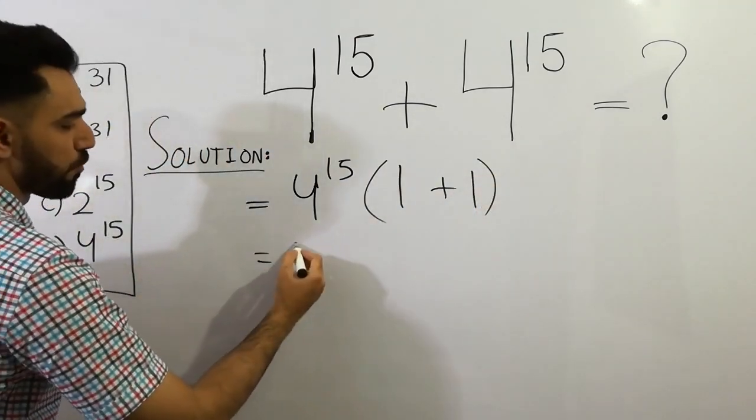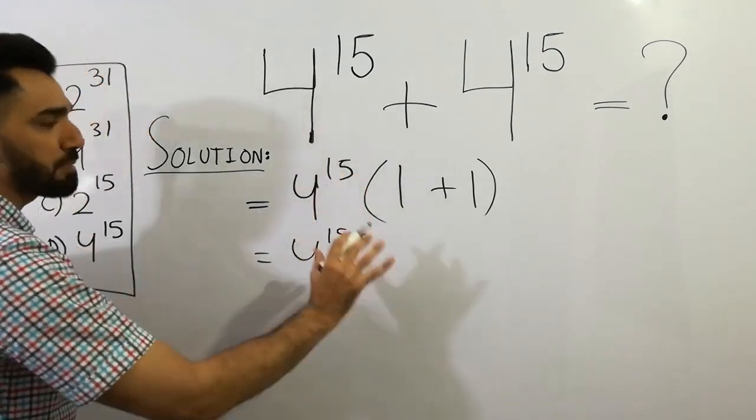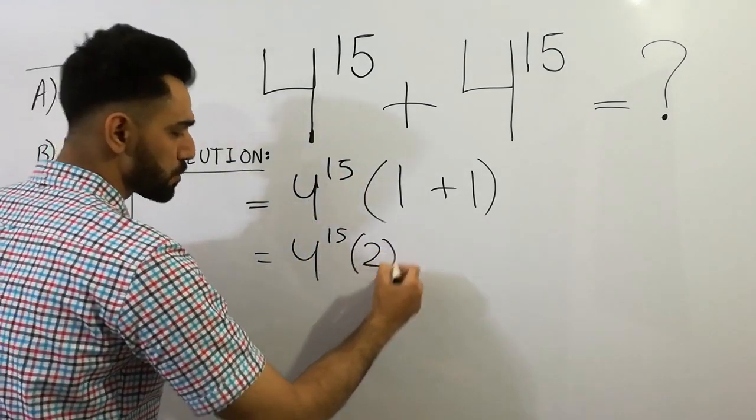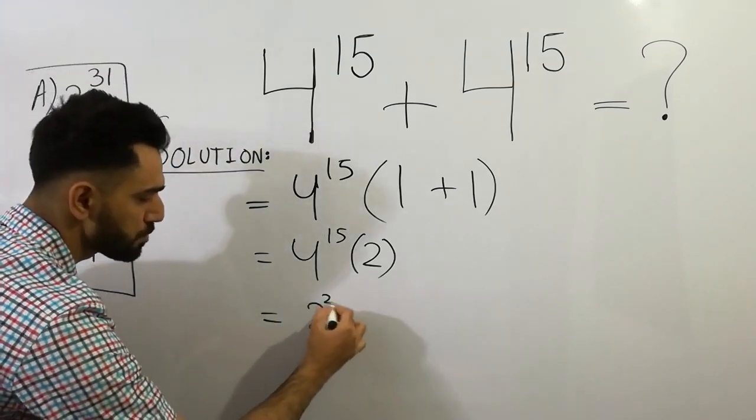The next step: 4 raised to power 15 as it is, and 1 plus 1 gives 2. The next step is very simple—4 is 2 squared, so you can write 2 squared, bracket 15, times 2.